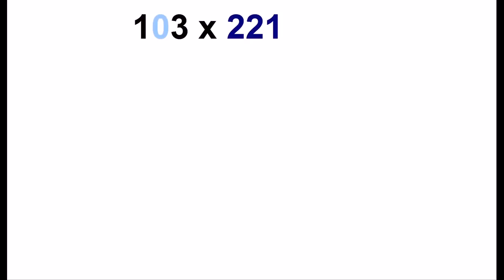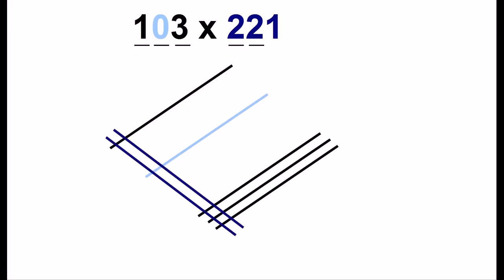You can even use this trick when a number includes zero. But one thing, when you draw this line, you should still draw the line, but put it in a different color or a different marking. And the trick will be that we don't count any of the dots for that line.